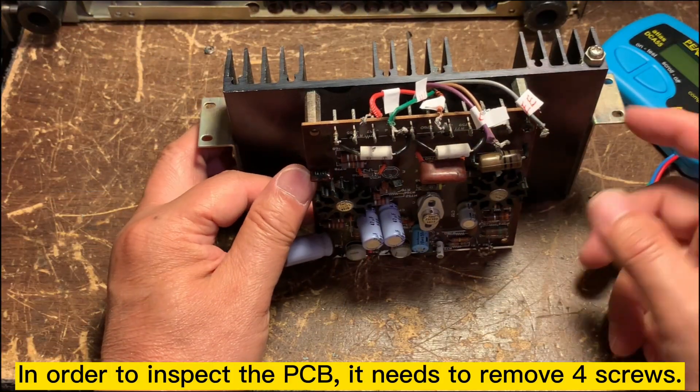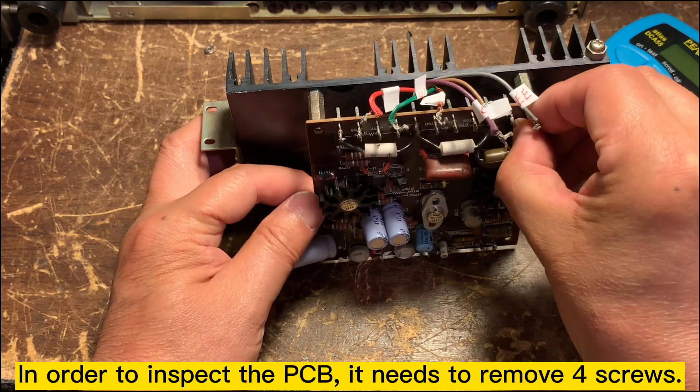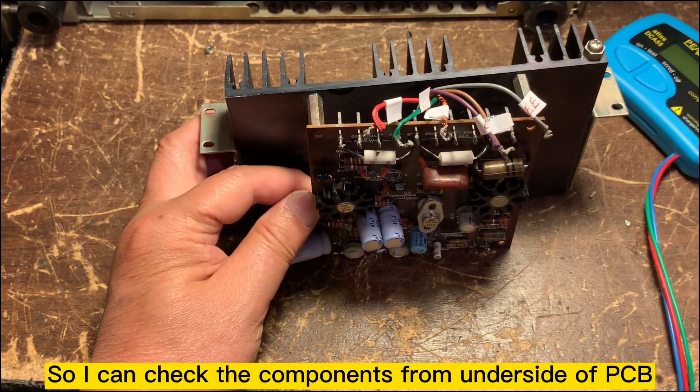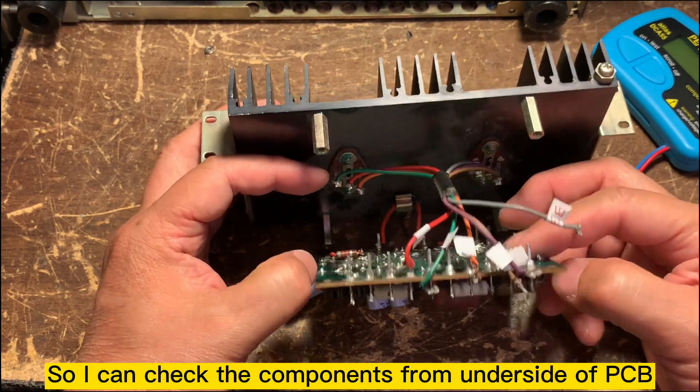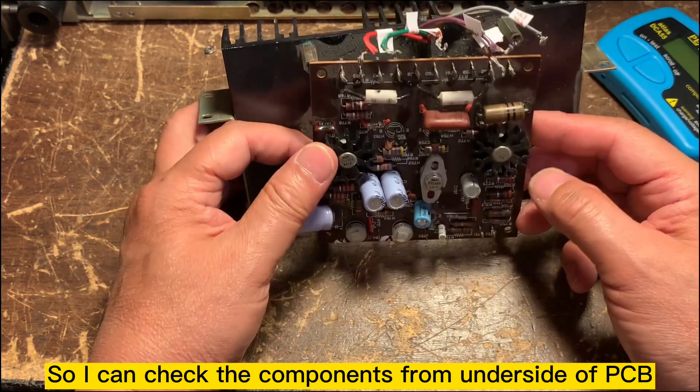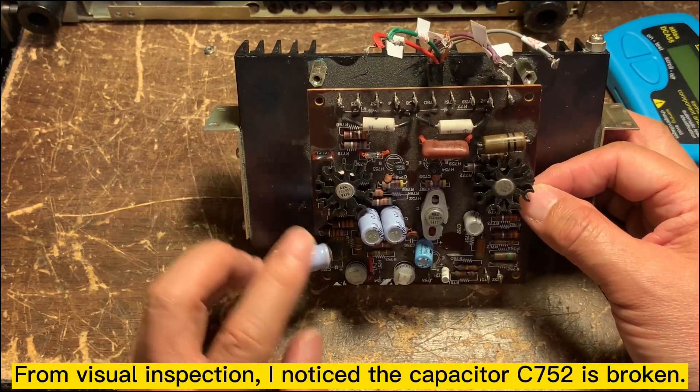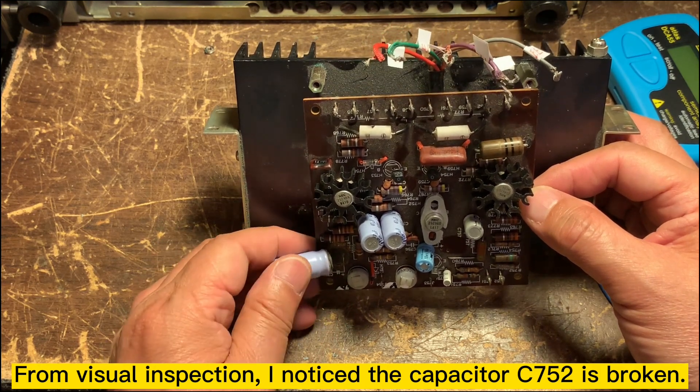For the inspection, I need to take all the screws out so I can check the component on the back side of this PCB. And from the visual inspection, we know this capacitor is already broken.